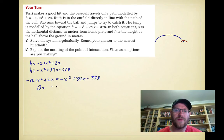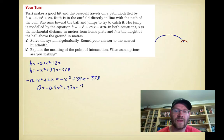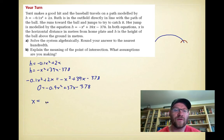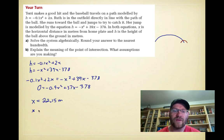The quadratic formula works best here. Moving everything to one side gives −0.9x² + 37x − 378 = 0. Applying the quadratic formula yields two values for x: approximately 22.15 meters and 18.96 meters.